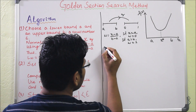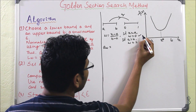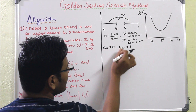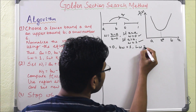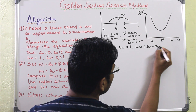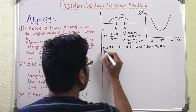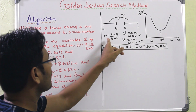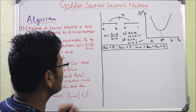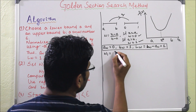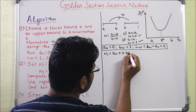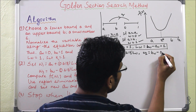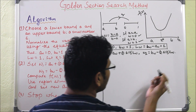The new lower bound aw equals 0 and bw equals 1. From aw and bw, we find lw, which is bw minus aw equal to 1. After converting the interval ab to 0 to 1, we construct two interior points: w1 = aw + 0.618 × lw, and w2 = bw - 0.618 × lw.